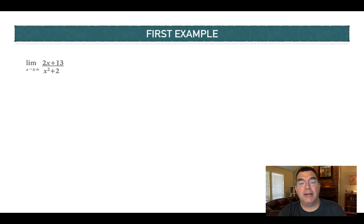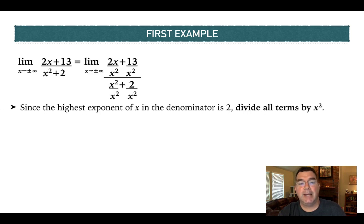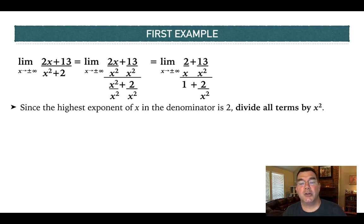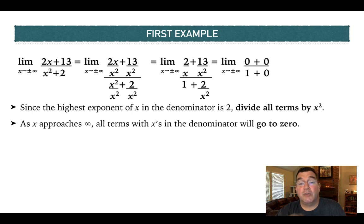Looking at the denominator, I've got x squared, so I divide every term by x squared. That gives me: 2x over x squared is 2 over x; 13 over x squared stays the same; x squared over x squared becomes 1; and 2 over x squared stays as 2 over x squared. As x approaches plus or minus infinity, any term with x in the denominator approaches 0 — any number over a really huge number is 0. So 2 over x approaches 0, 13 over x squared approaches 0, 2 over x squared approaches 0, leaving just 1 on top and 1 on the bottom — this whole fraction approaches 0.